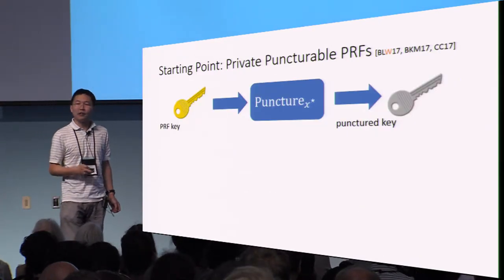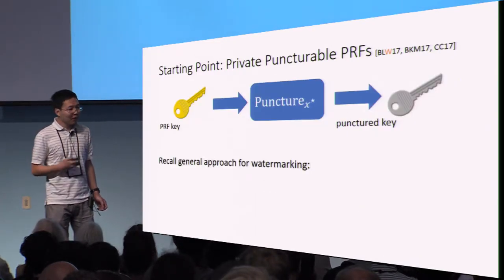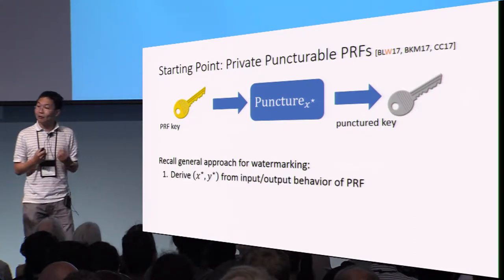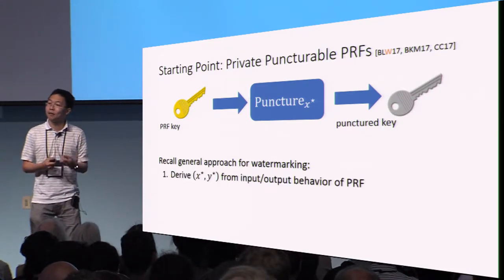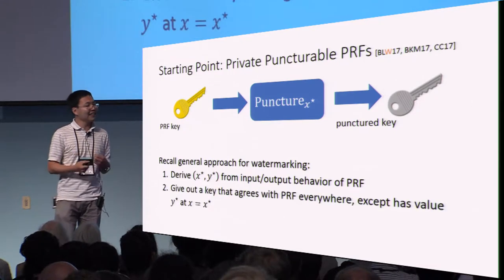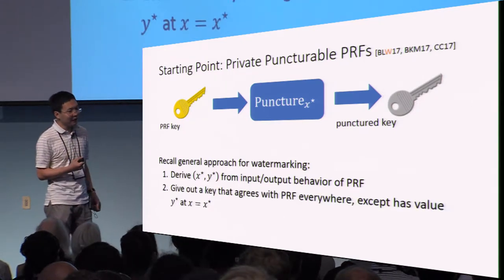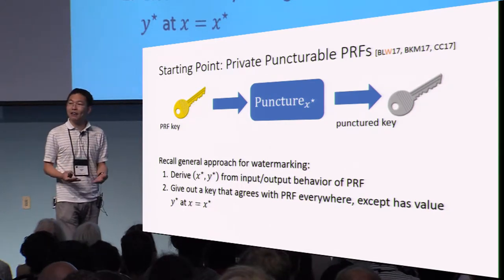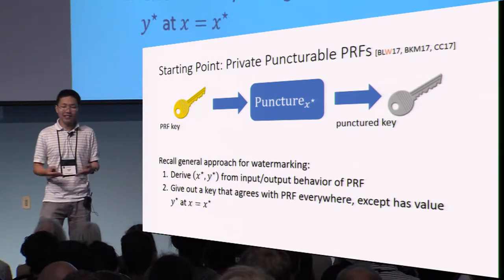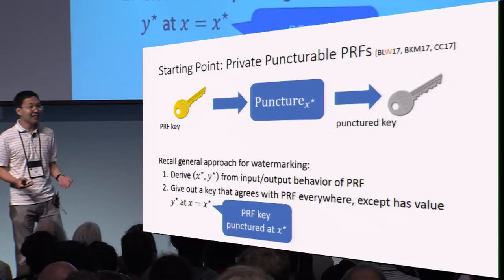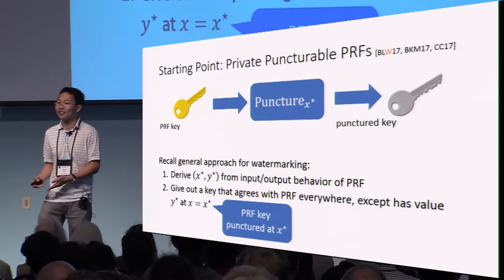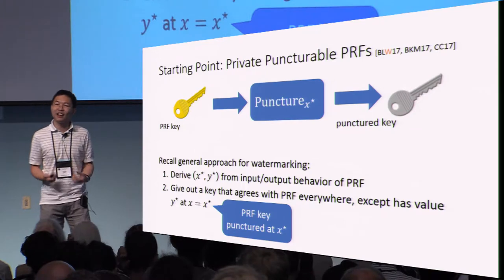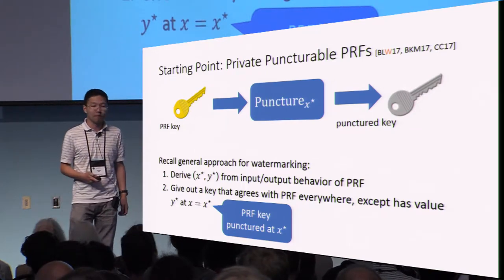How does puncturing relate to watermarking? Let's recall our general approach: we derive the special point x* from the output behavior of the PRF and then generate a key that agrees with the PRF everywhere except at x*. If you look at the schema of a puncturable PRF, these things almost line up perfectly. We can just construct our watermark key as a punctured key. So why does puncturing not already give us a solution for this problem?